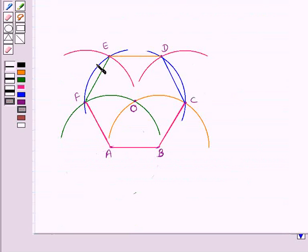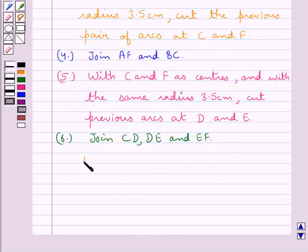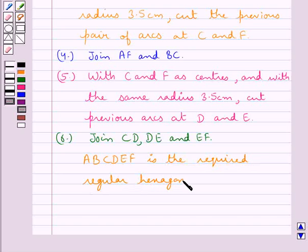So ABCDEF is the required regular hexagon of side 3.5 cm.